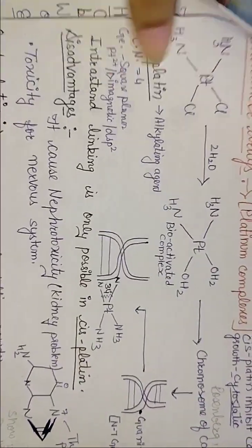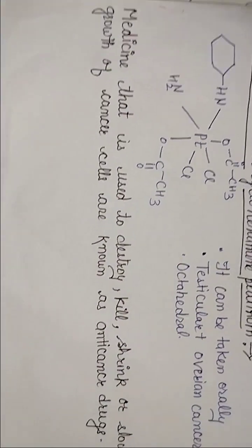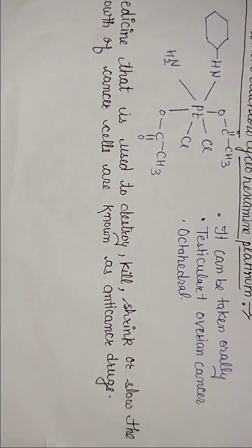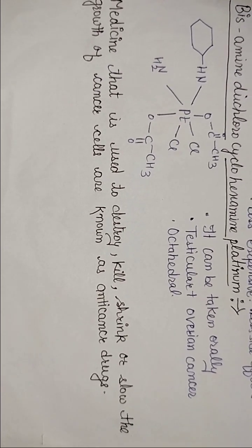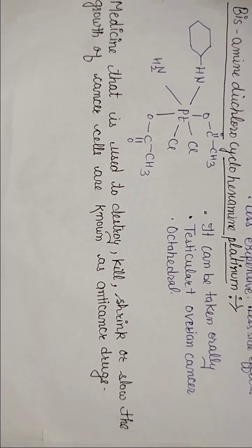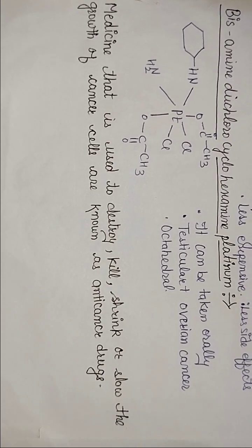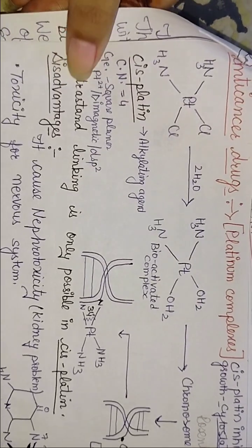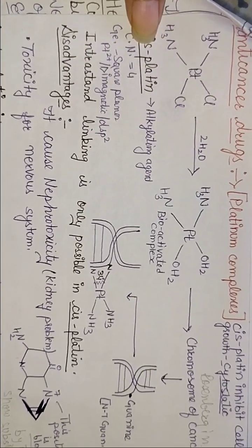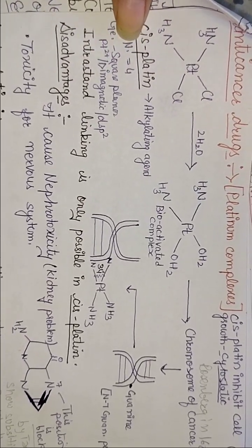Anti-cancer drugs destroy or shrink the growth of cancer cells, which are abnormal cell growth we call cancerous cells. For platinum complexes we have to discuss cisplatin, which inhibits growth and is cytostatic.